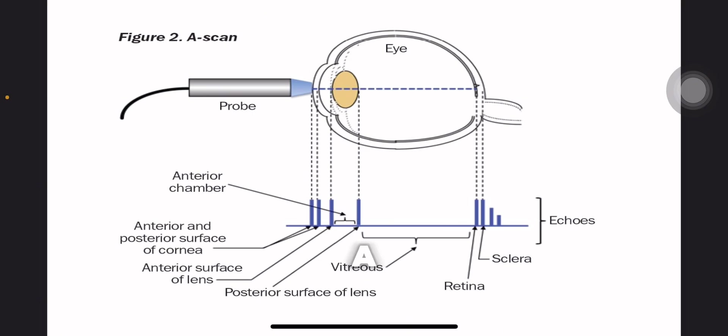In summary, A-mode ultrasound provides a one-dimensional depth profile of the tissues along the ultrasound beam's path. The height of the peaks indicates the strength of the reflections, or how hard or dense the material is. And their horizontal position indicates the depth of the reflecting structures.